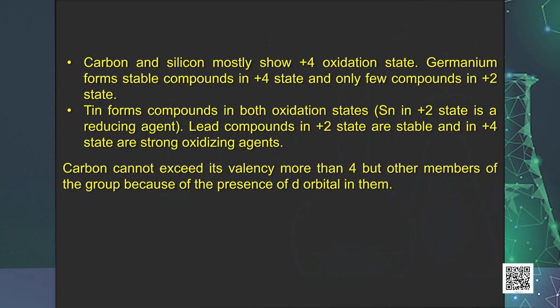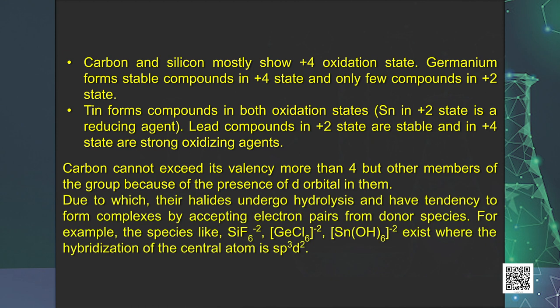Although carbon cannot exceed its covalence more than 4, other elements of the group can do so. This is because of the presence of d orbitals in them. Due to this, their halides undergo hydrolysis and have a tendency to form complexes by accepting electron pairs from donor species. For example, species like hexafluorosilicate, hexachlorogermanate, and hexahydroxytin exist, where the hybridization of the central atom is sp3d2.